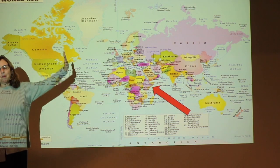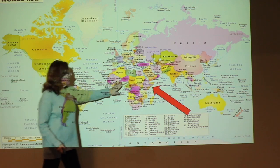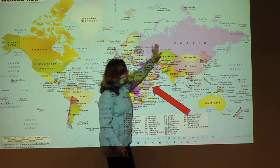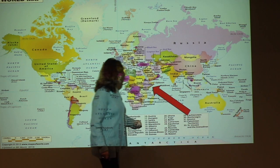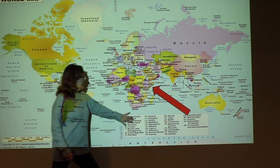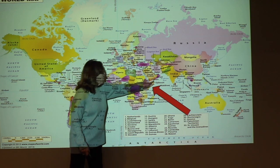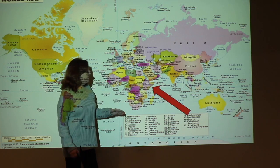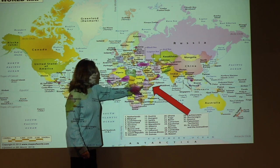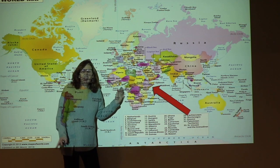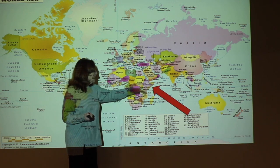Here's our map of the world. We've got North America, South America, Africa, Europe, Asia, and Oceania. We find Ethiopia right here in the Horn of Africa. They refer to this part of Africa as the Horn of Africa because it sticks out kind of like a tusk — like an elephant or an animal with a tusk.